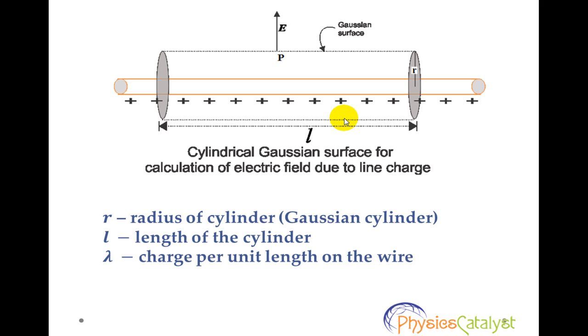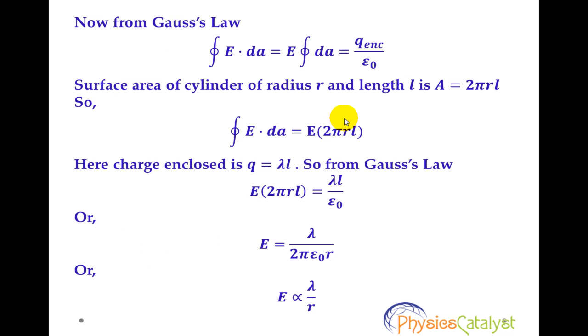So from Gauss's law, integral E dot dA equals charge enclosed over epsilon naught. Now considering left hand side of this equation, integral E dot dA equals E integral dA, as electric field E is constant at all points on curved surface. Surface area of cylinder of radius R and length L is given by A equals 2 pi R L. So integral E dot dA equals E times 2 pi R L.